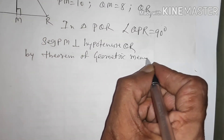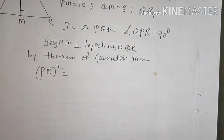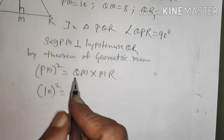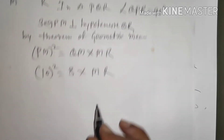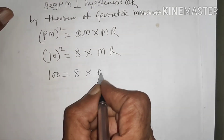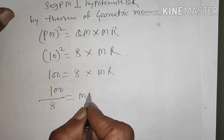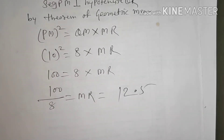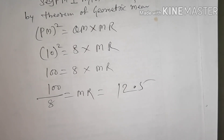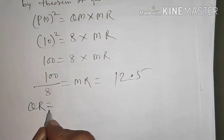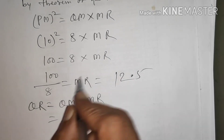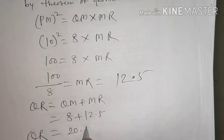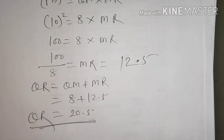By the geometric mean theorem: PM² = QM × MR, so 10² = 100 = 8 × MR. Therefore MR = 100 ÷ 8 = 12.5. Now QR = QM + MR = 8 + 12.5 = 20.5. Therefore QR = 20.5. Try similar problems on your own using this approach.